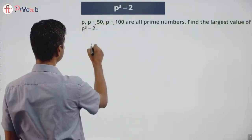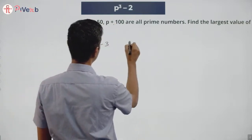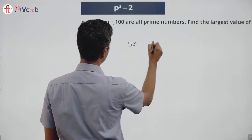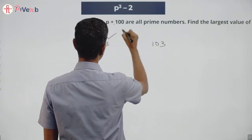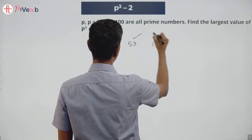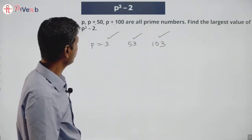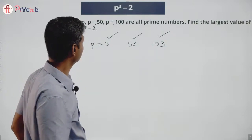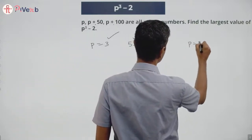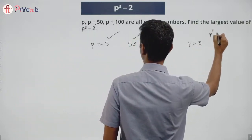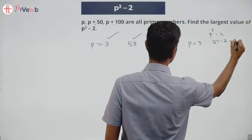I am going to put p is 3. 3 plus 50 is 53, 3 plus 100 is 103. This is prime, this is prime, this is prime. Lovely! All three are prime. So p could be 3. In which case, p cubed minus 2 would be 27 minus 2, which is 25.